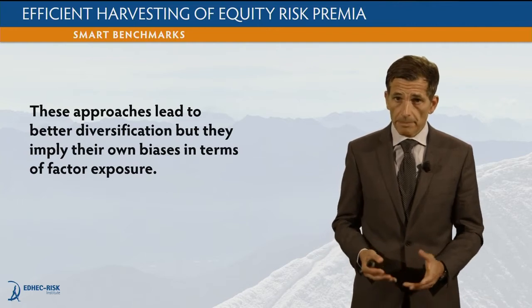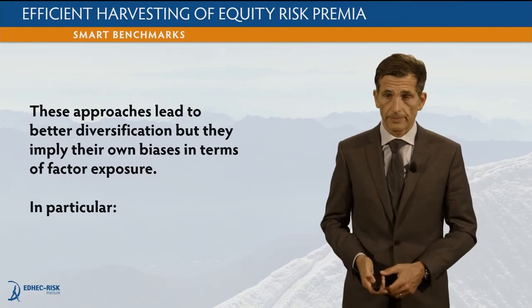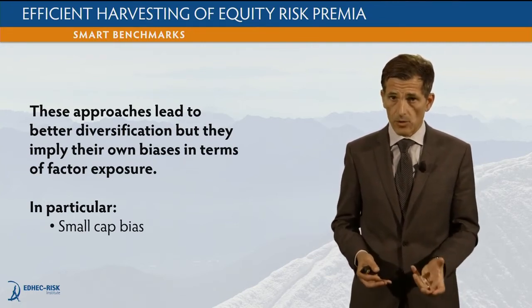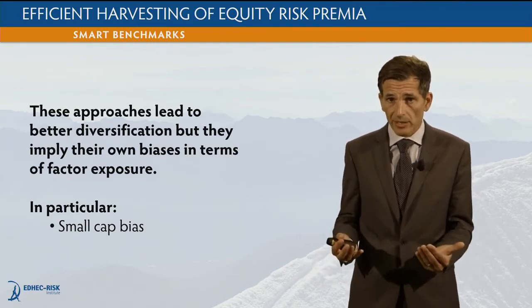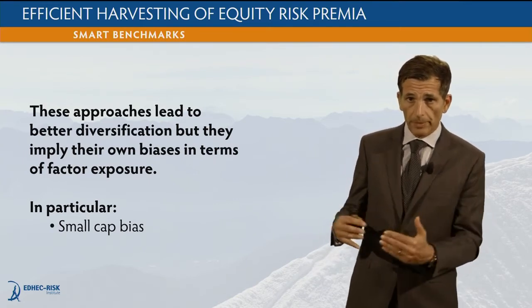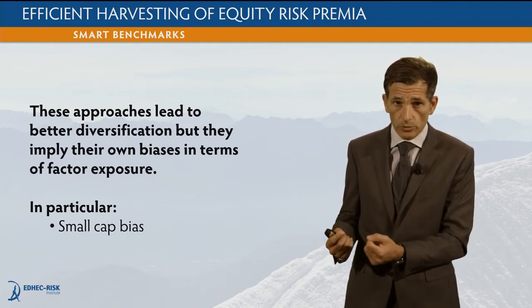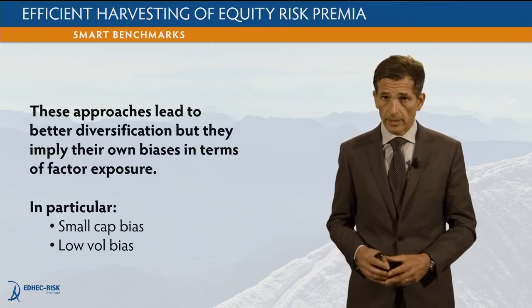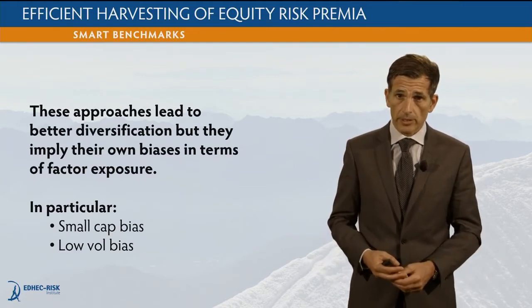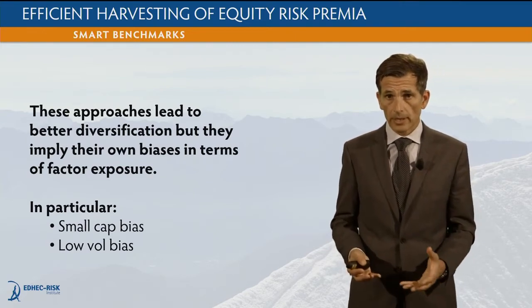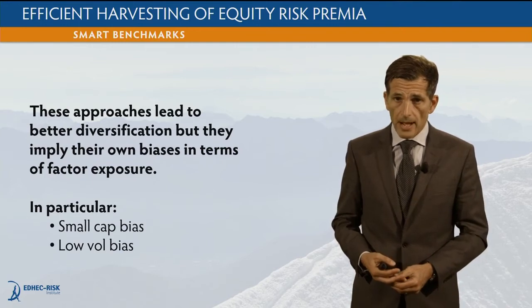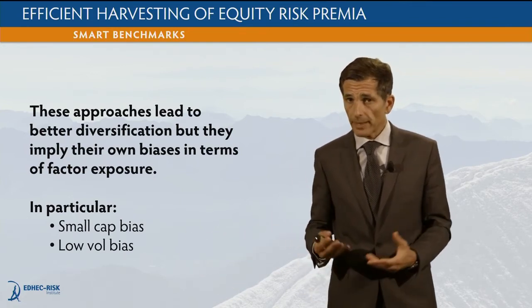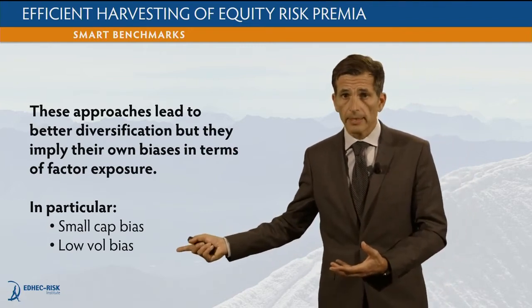The problem with these smart benchmarks is that they imply their own biases in terms of factor exposure. An equally weighted benchmark overweights smaller cap stocks relative to a cap-weighted benchmark, inducing a small cap bias. Risk parity and minimum variance portfolios — when using the best possible estimate for the covariance matrix — lead to overweighting low-vol stocks, inducing a low-vol bias. The point is: we don't even control what the bias is. The bias is merely an artifact of the weighting scheme.